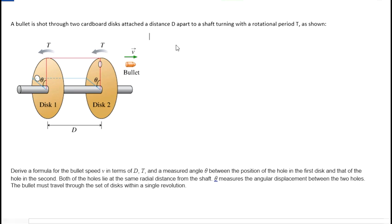So we can figure out the actual velocity of the bullet knowing these things. The velocity is distance, which we'll call big D for this distance here, over time. And what is the time? The time is the time it takes the bullet to go from disc one to disc two, or the time it takes the disc to rotate through this angle theta.